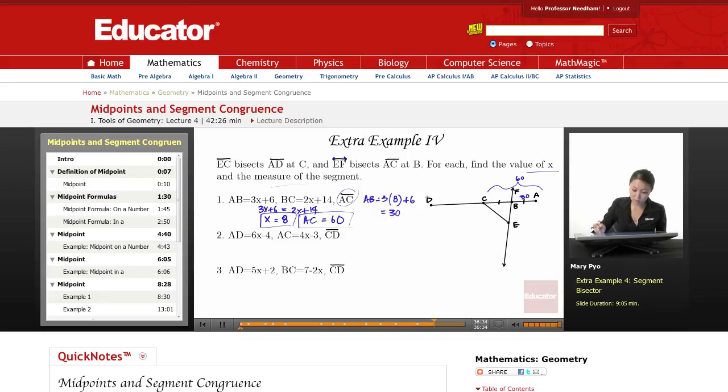So AD, the whole thing, is 6x minus 4, and then AC is 4x minus 3. I can do this two ways. I can make... if AC is 4x minus 3, that means DC, or CD, is 4x minus 3. So I can just do 4x minus 3 plus 4x minus 3, or you can do 4x minus 3 times 2, or you can do the whole thing AD is 6x minus 4 minus this one. So I'm just going to do 2 times 4x minus 3, because AC is 4x minus 3, and AD is double that.